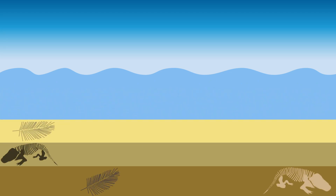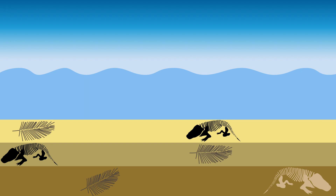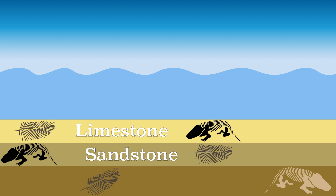Sedimentary rock is easily recognized by its stratification. Fossils can also be found in sedimentary rocks. In other rock types, the remains of plants and animals perish due to the high temperature or pressure, while sedimentary rocks do not. Examples of sedimentary rocks are limestone or sandstone.